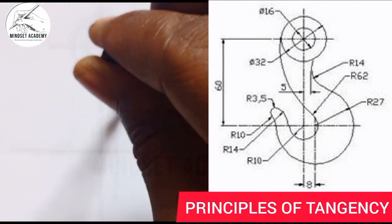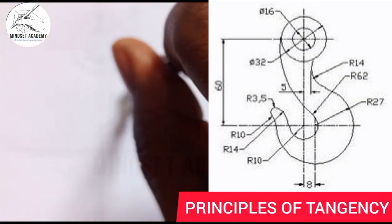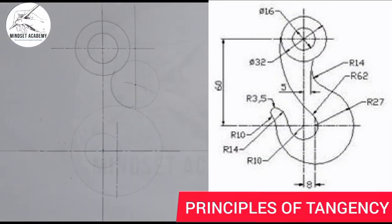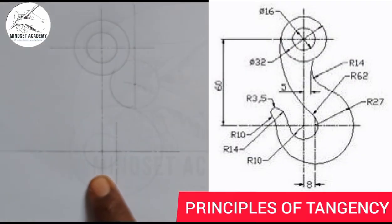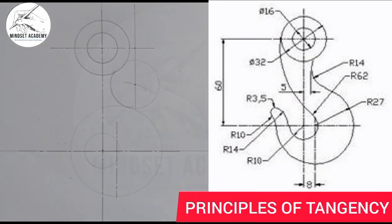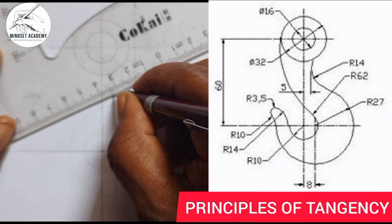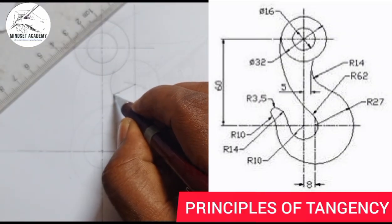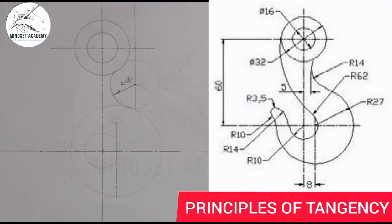I want to explain what external and internal mean. Here's another circle: this circle is external to the main circle — it is outside it. Whenever it's external, you add the two radii. The center of the connecting arc from here to this point has radius 14, as you can see.